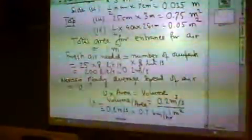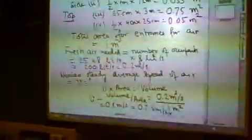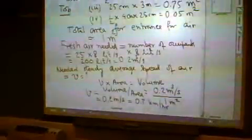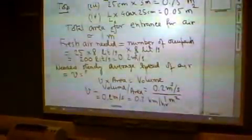The steady average speed of air, if that is V, then V multiplied by area of the opening equals volume. From there you can calculate the velocity that comes out to be 0.2 meters per second or 0.7 kilometers per hour.